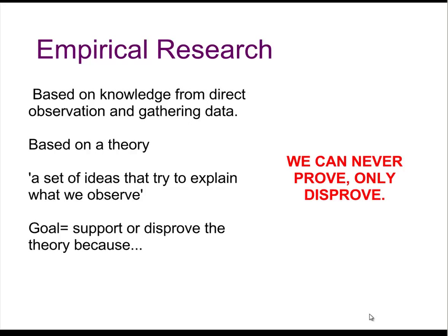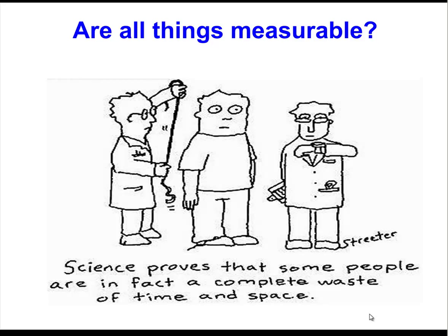Empirical research simply means that psychologists are collecting data by experimentation and observation. Before they set out to do this, they need a theory to help them understand and explain what they will test and observe. The goal is to support or disprove the theory, because the sad truth is we can never actually prove a theory to be true — we can only support it until a better one comes along. Remember, we're talking about theories and not laws. Psychology is sometimes referred to as a soft science because it is interested in things that are difficult to measure, such as a person's sense of self-esteem. Some things are incredibly difficult — possibly even impossible — to measure.